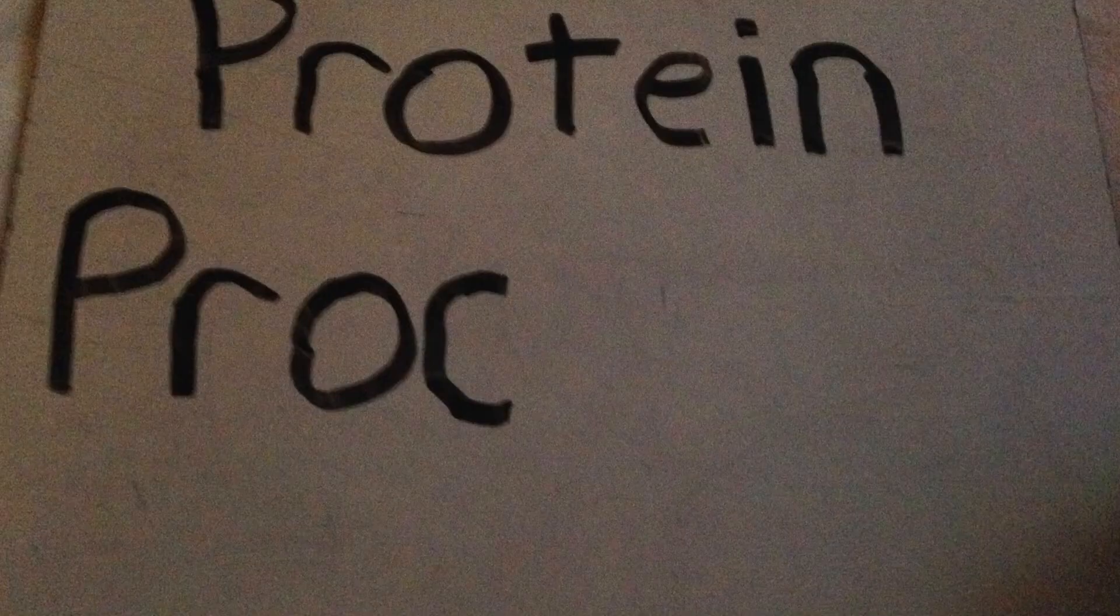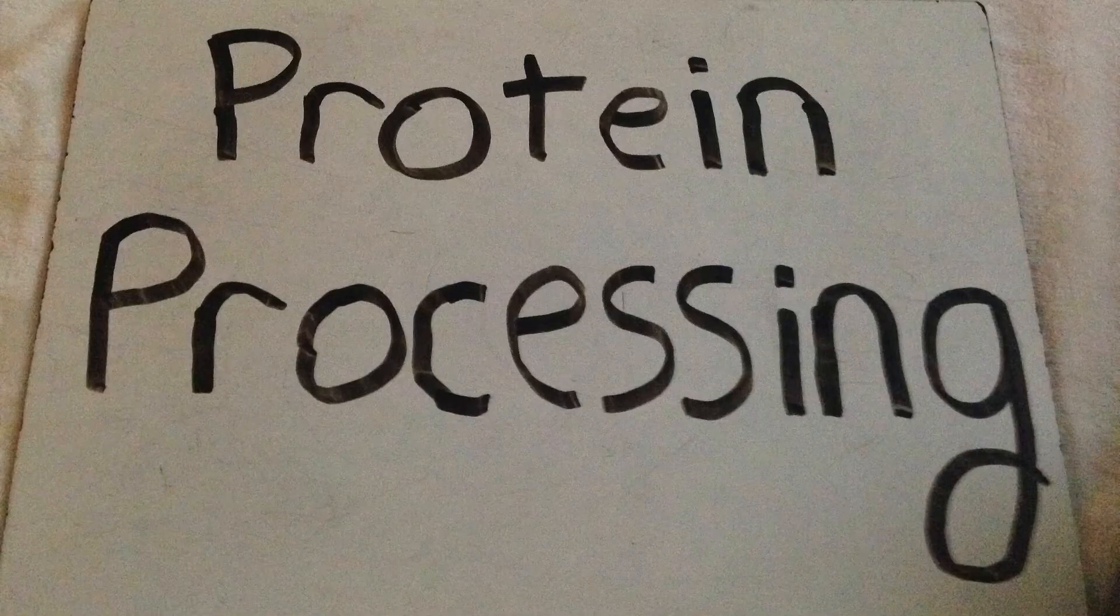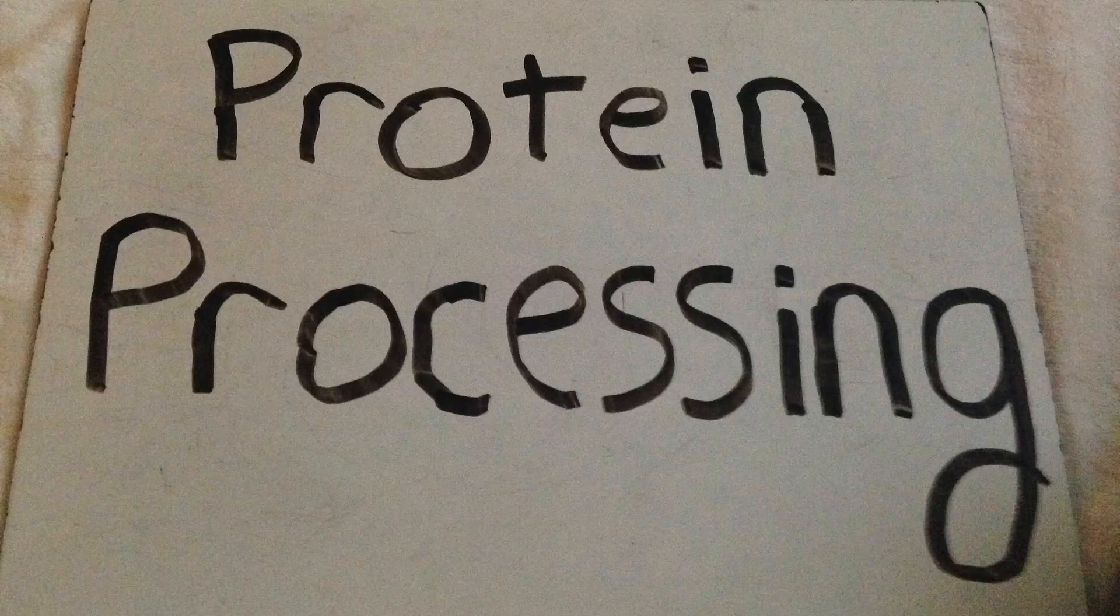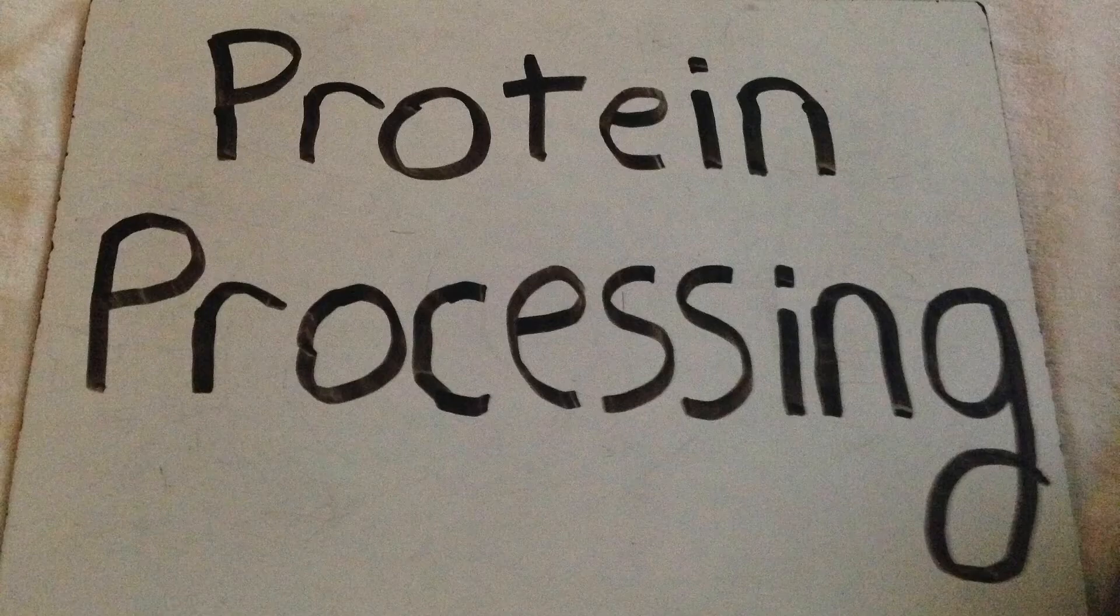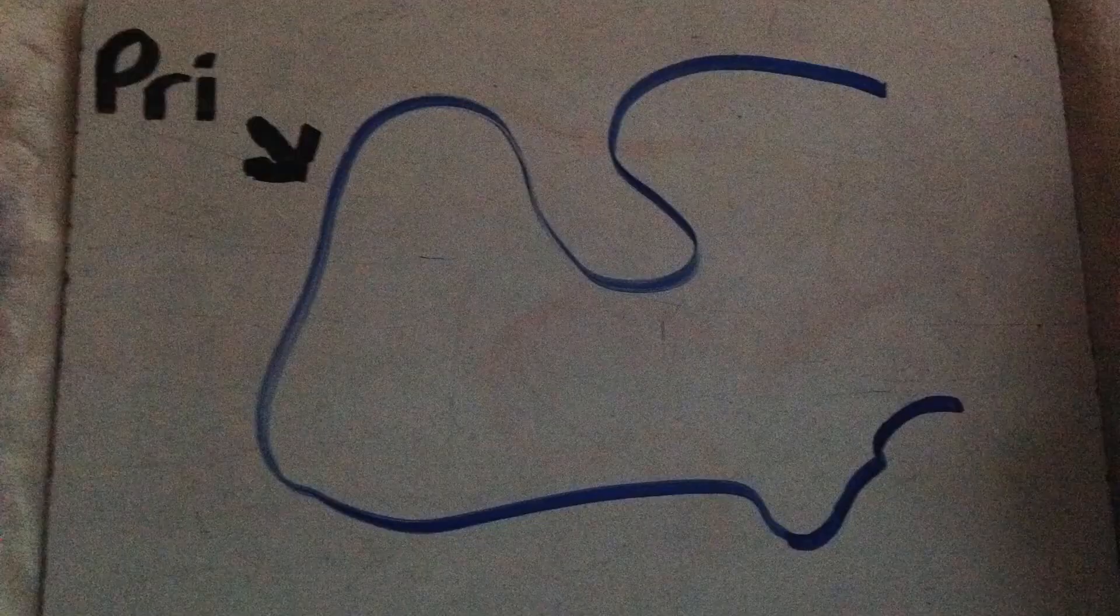Protein processing occurs at the Golgi body. The purpose is to make the amino acid chain fully functional. The polypeptide forms in a 3D shape in three levels of folding. The first level of folding is the linear polypeptide chain.